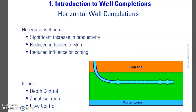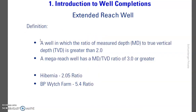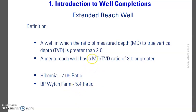As in the last video, we stopped here — we talked about horizontal wells and the benefits of horizontal wells, which you can check in the previous video. Today we'll continue. The extension ratio is the ratio of measured depth to true vertical depth. If it's three or greater it's called mega-reach; if it's 2.05 it's called hyper-reach. This is because measured depth is always greater than true vertical depth.